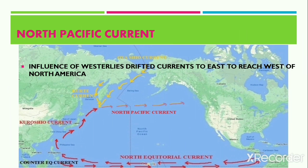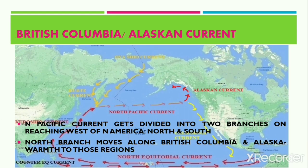Upon reaching the north of Japan, this current is influenced by the prevailing Westerlies. Hence, the currents turn towards the right and flow eastwards as the North Pacific Current. The North Pacific Current, upon reaching the west coast of America, again gets divided into two branches. The northern branch moves in an anticlockwise direction and flows through the coastal regions of British Columbia and Alaska. These currents are comparatively warm when compared to the cold land areas, and hence this current is termed the British Columbia or the Alaskan Current.